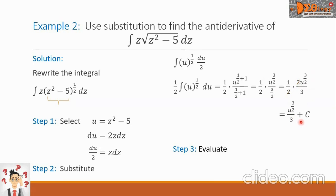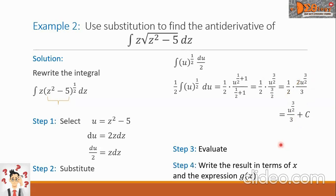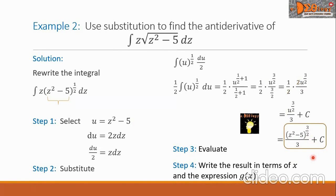Then we write plus c. Step 4: return the value of u. The value of u is z squared minus 5, so the final answer is the quantity z squared minus 5, raised to 3 over 2, all over 3, plus c.